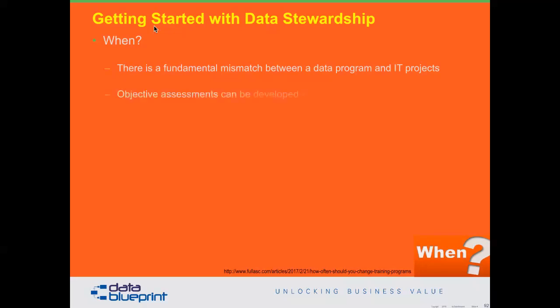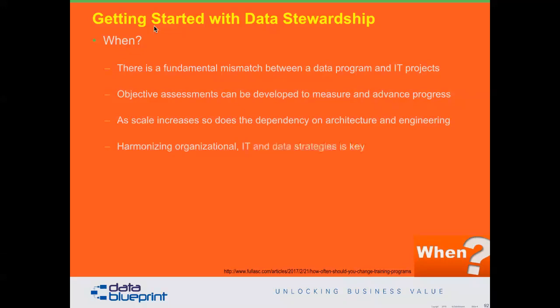Fundamental mismatch. There are objective assessments that can be used to measure progress in advance — which is the repeatable process I was describing. You won't know it at first, but after you've done it three or four times, you'll get it. As scale increases, so does the dependency on these architecture and engineering concepts, and harmonizing organizational IT and data strategies is absolutely key to being successful. Sequencing some aspects of this can be very, very helpful to the organization.